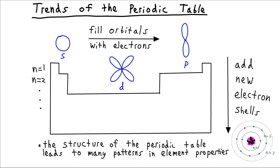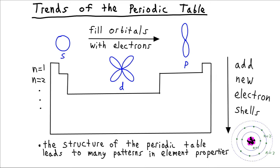The reason these trends exist is because of the structure of the periodic table. We've structured it so that the outer electrons from the s orbitals, and the p orbitals, and the d orbitals, and the f orbitals are all grouped together. And they're also grouped by increasing energy level. So the filling of the electrons, and the shape of their orbitals, and the size of their orbitals, all influence these different trends in the periodic table.